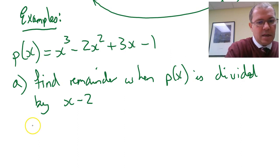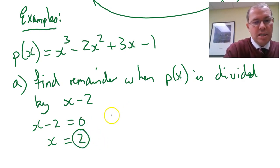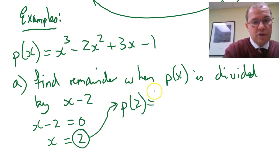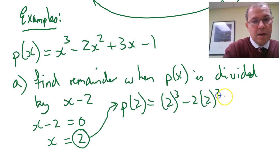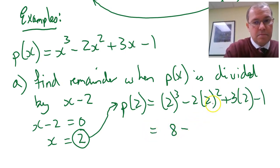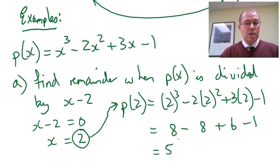So the remainder theorem says that we need to set x-2 of the divisor equal to 0 to find out the x value, which is 2. Put the x value of 2 into the polynomial, and that will be the remainder. So P(2) would be 2³, because it's x³, minus 2 times 2², plus 3 times 2, minus 1, which equals 8, minus 8, plus 6, minus 1, which equals 5. So we've very quickly found the remainder when we divide P(x) by x-2 without having to do any long division.